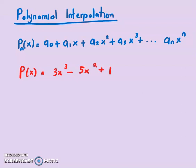For example, this is a polynomial of degree 3 given by 3x³ - 5x² + 1. Now the question says evaluate P(2). How do you do this?